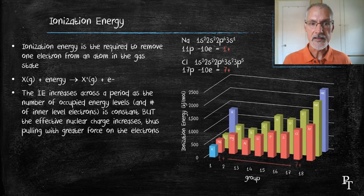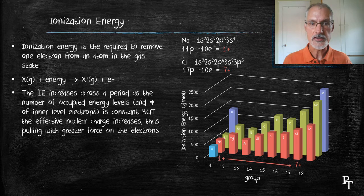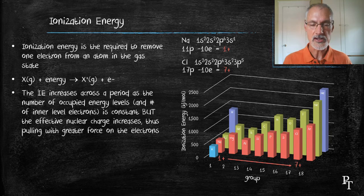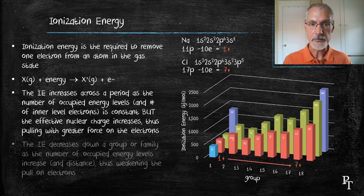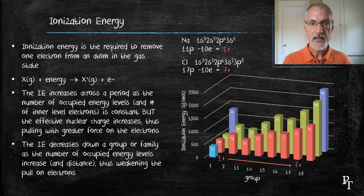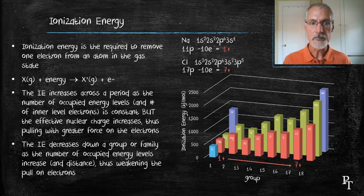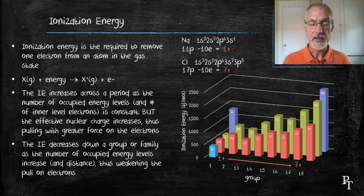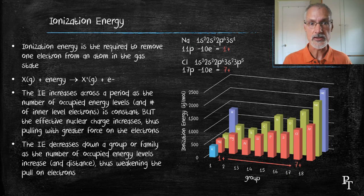As we move across the period then, because the effective nuclear charge increases, so does the ionization energy. As we move down a period, we'll see also a change in ionization energy. The additional electron energy levels that are added move the electron further from the nucleus. This results in a weakening of the attraction and a drop in the ionization energy.